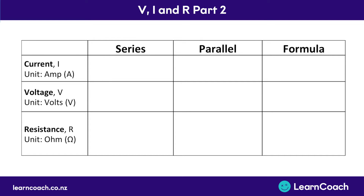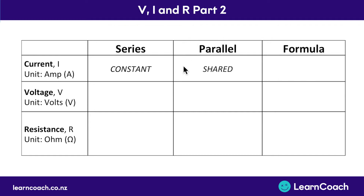Let's quickly summarise the key ideas in this video. The first is current. In a series circuit, there's only one pathway, so the current all around the whole circuit stays constant. Whereas in a parallel circuit, when there's more than one pathway, the current splits up into multiple pathways and gets shared amongst them.